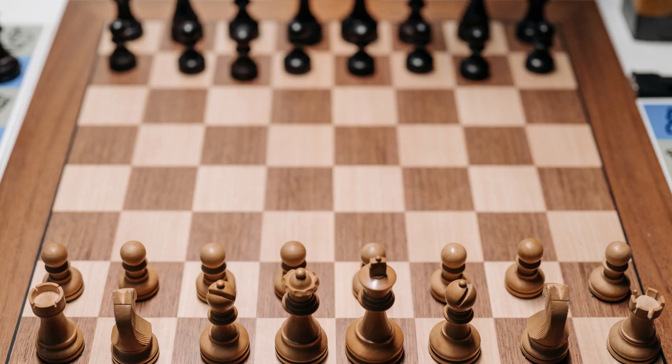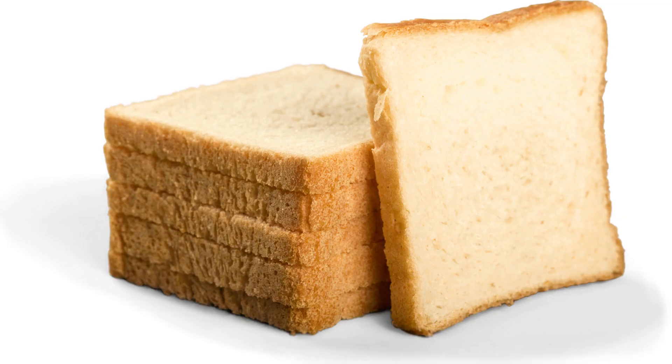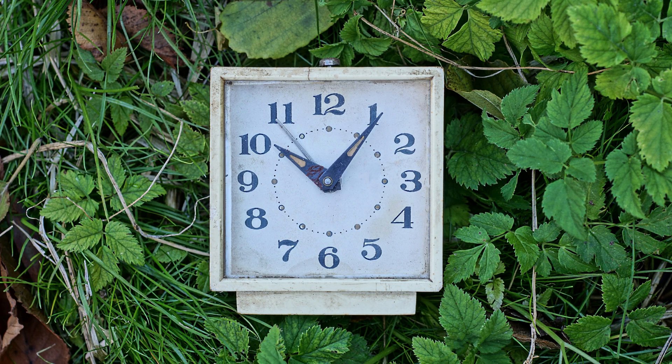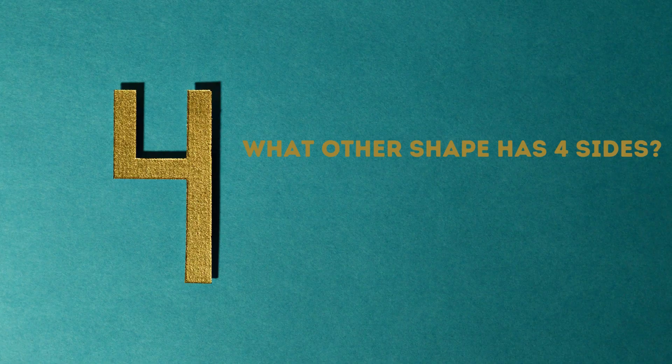This chessboard has square shapes on it. This bread is square shaped. This clock is square shaped. What other shape has 4 sides?